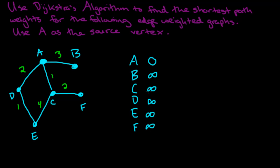The next step says we need to put our source vertex into our set S. I'm going to use red to mean that a vertex has been put into the set S — so this is keeping track of my solutions. When I put a red zero here, it means that A is now in the set S and its label is fixed at zero. Now we look at the neighbors of A which are not yet in the set S: that's B, C, and D. We take the minimum between infinity and 3 to get 3, the minimum between infinity and 1 to get 1, and we get 2 for D.